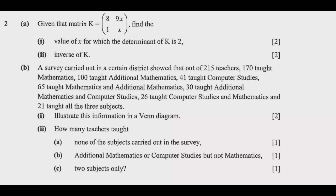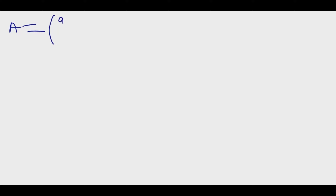Question 2 reads: given that matrix K has first column [8, 1] and second column [9X, X], find: part 1, the value of X for which the determinant of K is 2; and part 2, the inverse of K. So if you are given a matrix A with first column [a, b] and second column [c, d] like this...